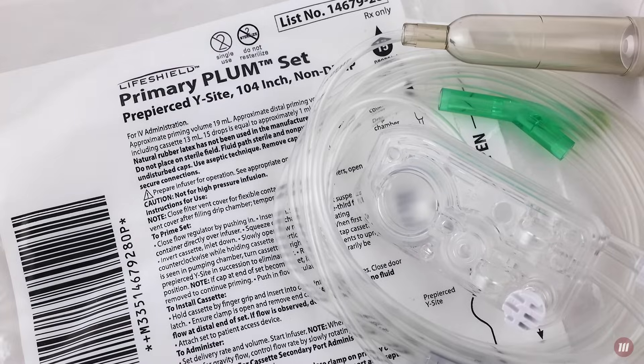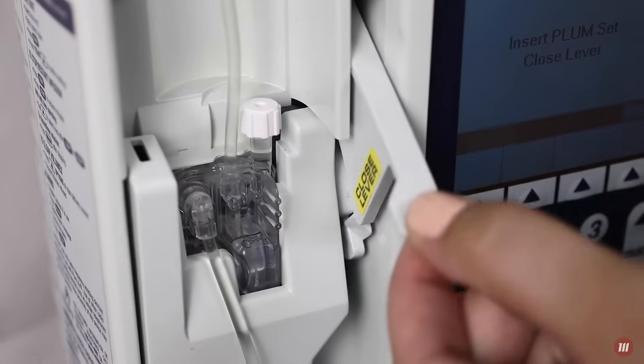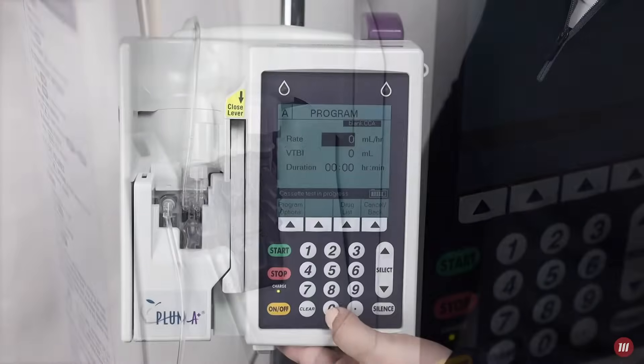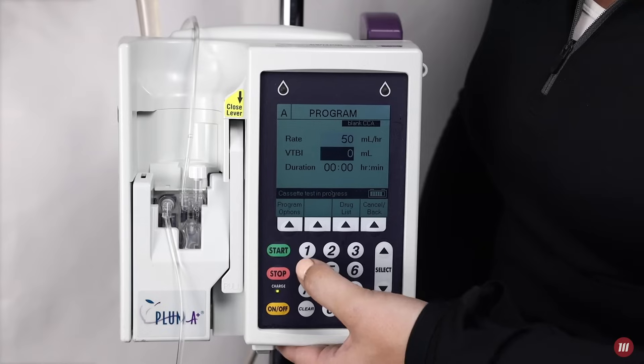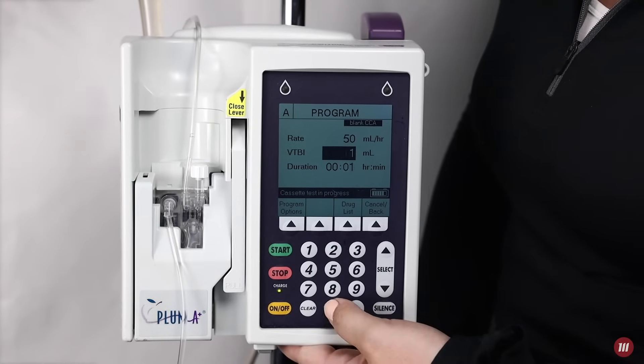Dedicated Plum cassette tubing is used to operate the Hospira Plum A Plus. Similar to other popular infusion pumps, the flow rate range is 0.1 to 999 milliliters per hour.